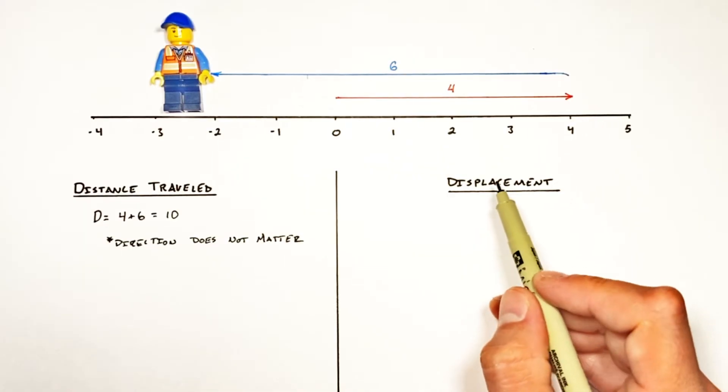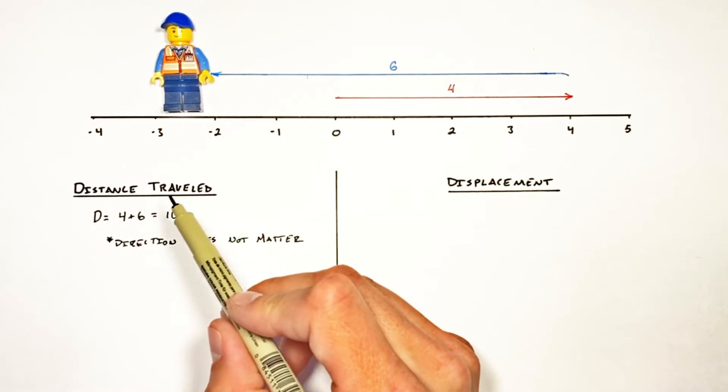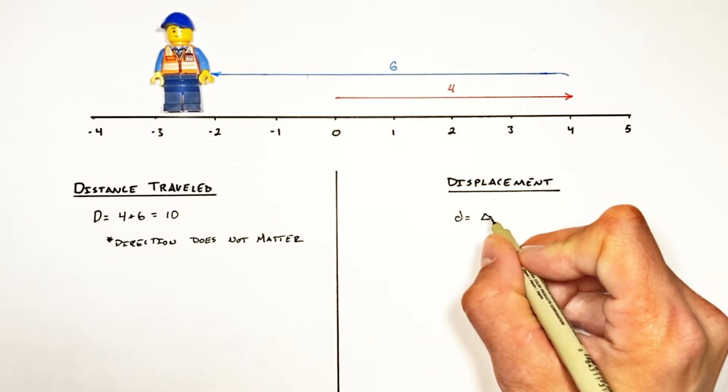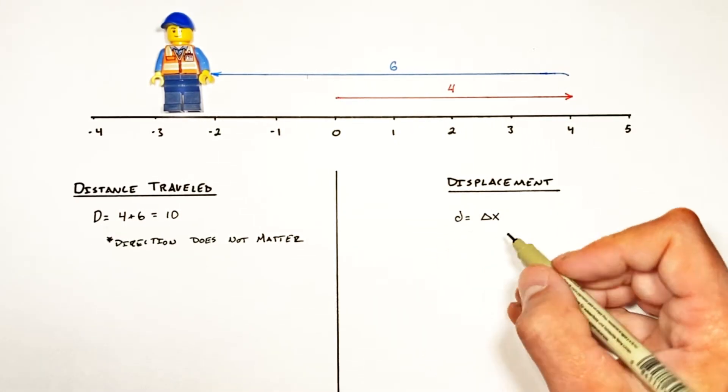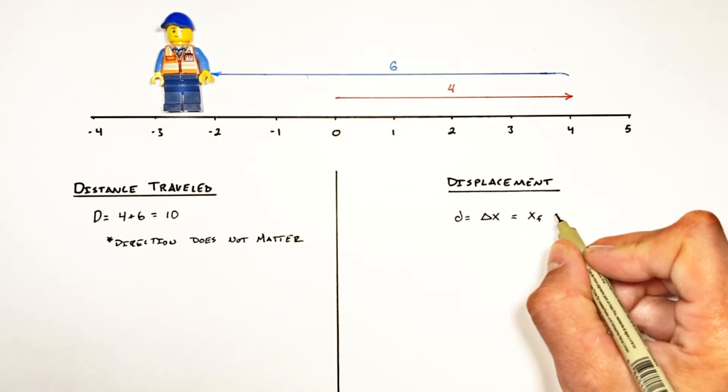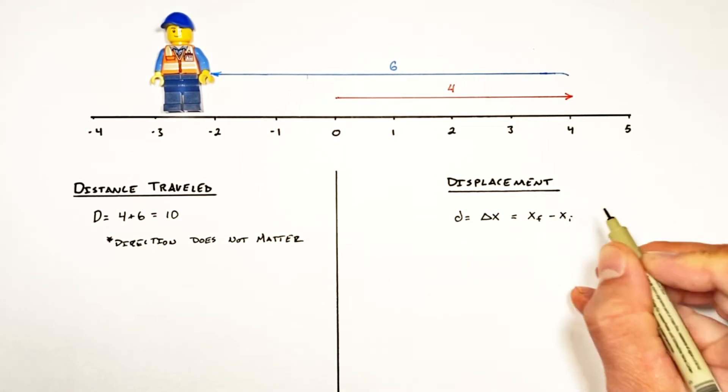See, now the thing about displacement is that it works a little bit differently than distance traveled. You see, displacement is given by change in position. Or if you want to write this out as a more usable equation, you can say a final position minus an initial position.